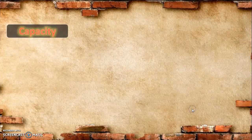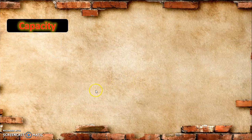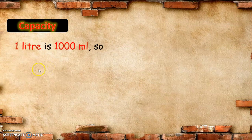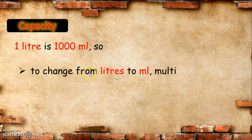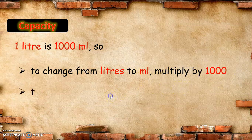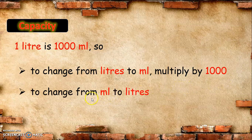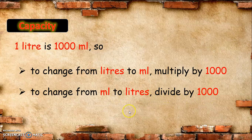Let us go to capacity. We all know that 1 liter is equal to 1,000 milliliters. To change from liters to milliliters, we need to multiply by 1,000. And if you want to change from milliliters to liters, we need to divide by 1,000. Let us have an example for that.